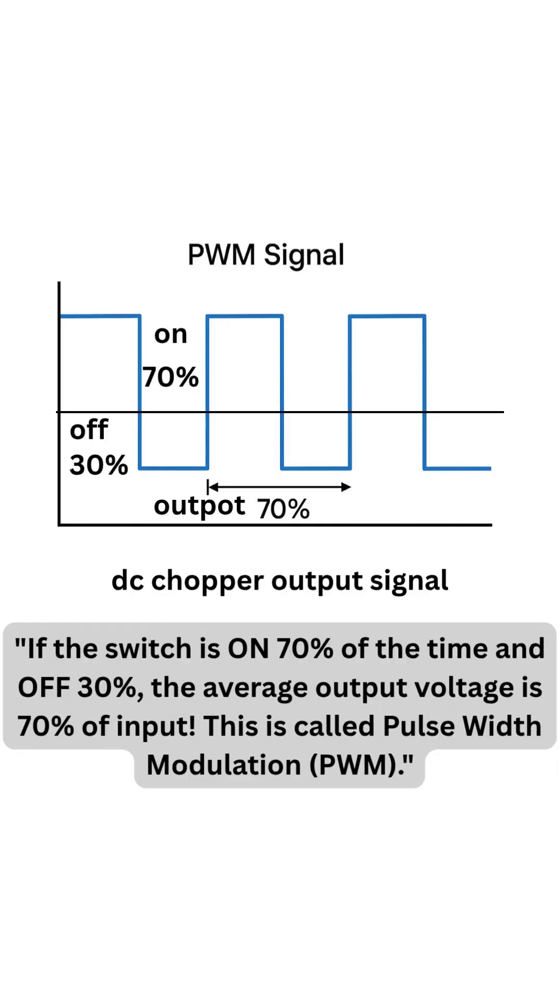If the switch is on 70% of the time and off 30%, the average output voltage is 70% of input. This is called pulse width modulation, PWM.